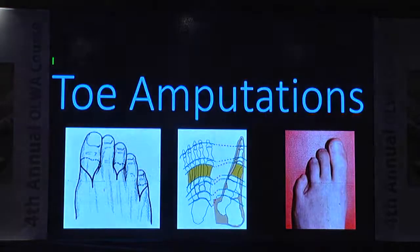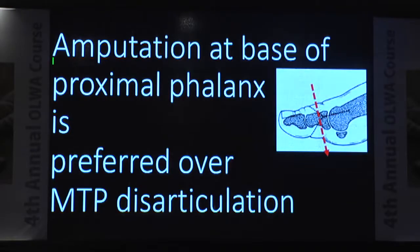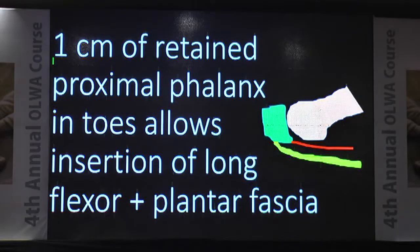Toe amputations: use long plantar and short dorsal flaps with a racket-shaped incision for toe amputations or MTP disarticulation. Amputation at the base of the proximal phalanx is always preferred over amputation at the MTP joint level. If you retain a centimeter of the proximal phalanx during toe amputation, it allows for the insertion of the long flexor and plantar fascia.